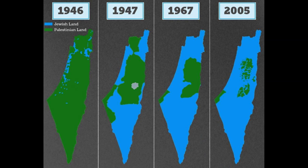The story begins in the late 19th century, when the Zionist movement began to advocate for the establishment of a Jewish homeland in Palestine. At the time, Palestine was part of the Ottoman Empire and was predominantly Arab in population.